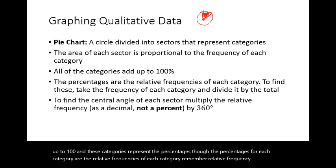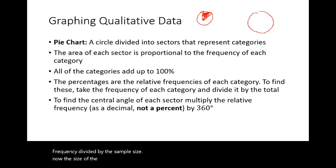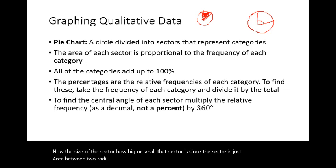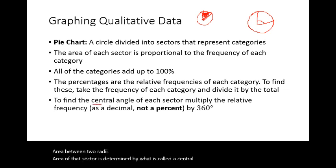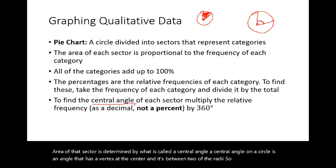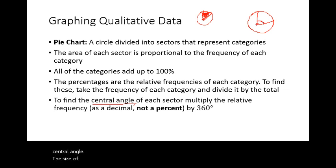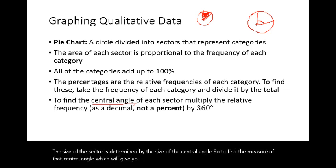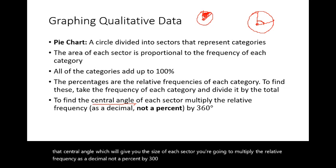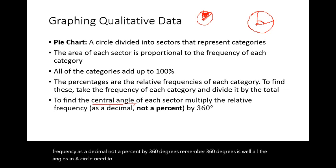The size of each sector is determined by a central angle — an angle with its vertex at the center of the circle, between two radii. To find the central angle for each sector, multiply the relative frequency as a decimal (not a percent) by 360 degrees, since all angles in a circle sum to 360 degrees.